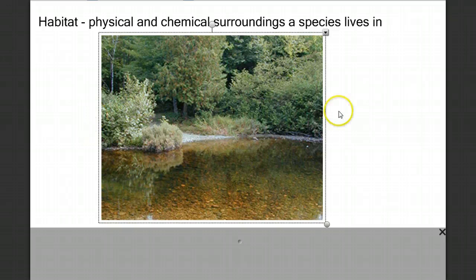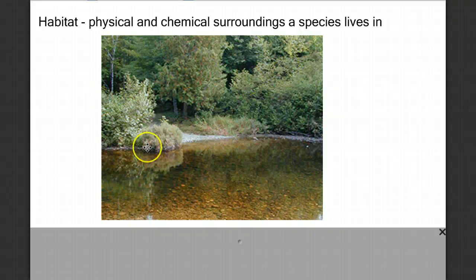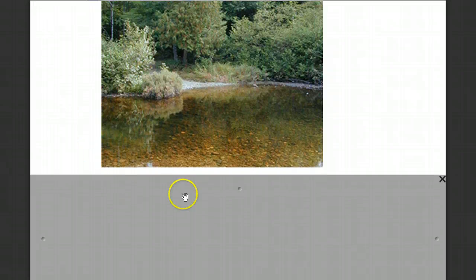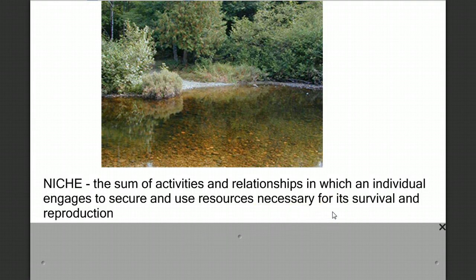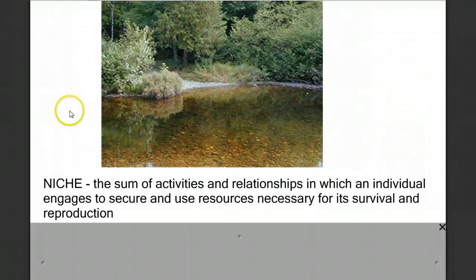Let's start with the concept of habitat. Habitat is the physical and chemical surroundings a species lives in. Now, we can see a habitat here, but what we don't see is what we refer to as the term niche. Often people use the word niche to mean habitat, but that's incorrect. The niche is not just where an organism lives, but what it does in that habitat — it's the sum of all the activities and relationships in which an individual engages to secure and use resources necessary for its survival and reproduction. It includes where it lives, but also what role that organism takes in that habitat.